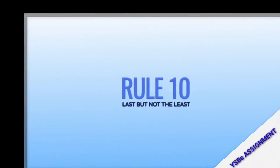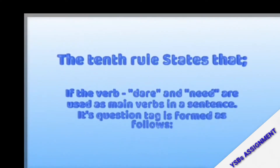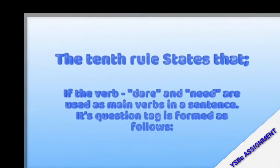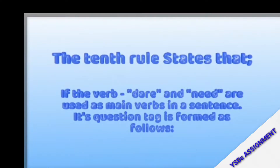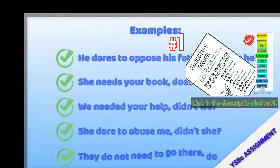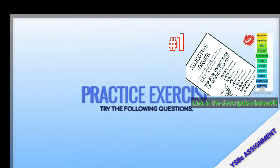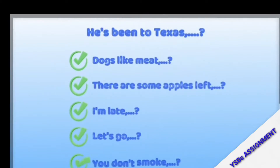Rule number ten: if the verbs 'dare' and 'need' are used as main verbs in a sentence, the question tag is formed as follows. Examples: 'He dares to oppose his father, doesn't he?' / 'She needs your book, doesn't she?' / 'We needed your help, didn't we?' / 'She dared to abuse me, didn't she?' / 'They dare to go there, do they?' Please check out my last class on adjectival order — the link is in the description below.